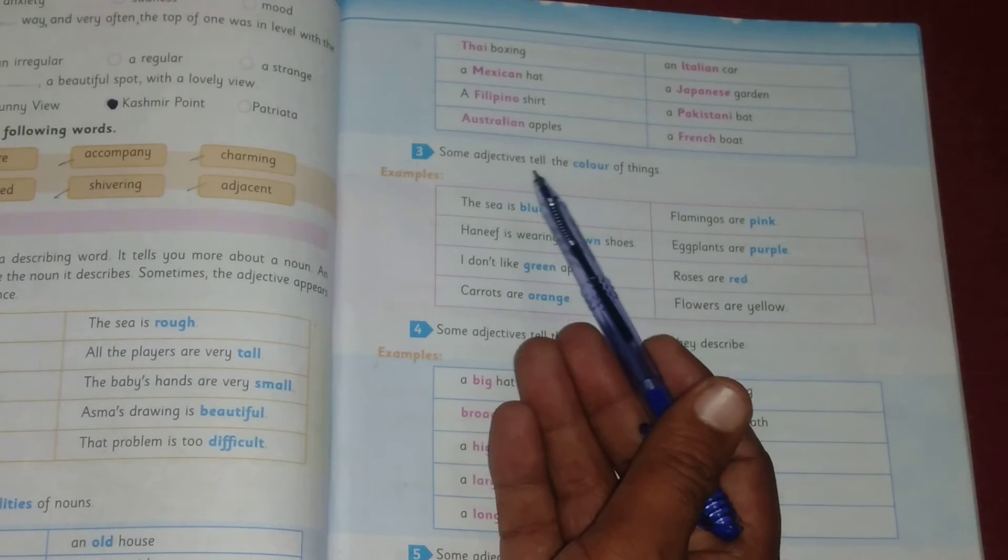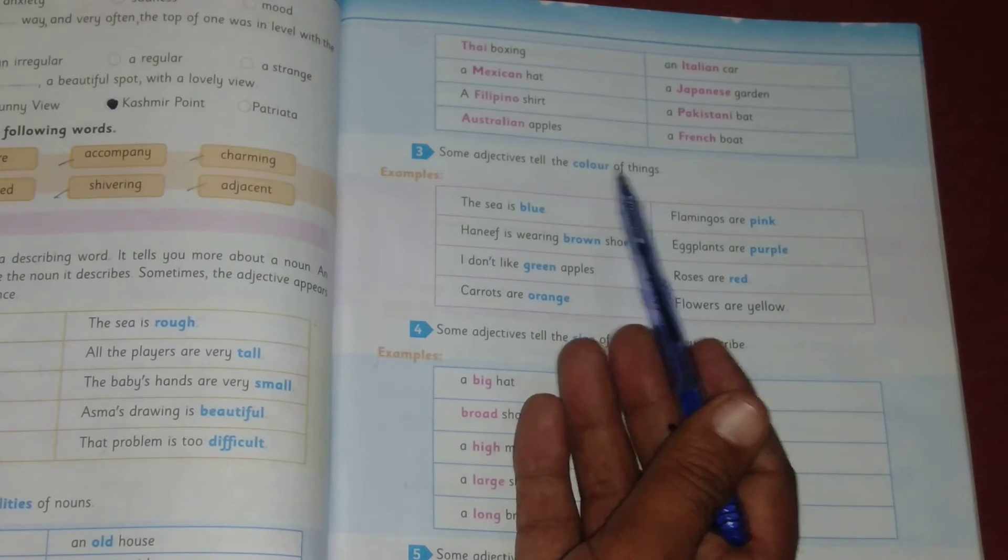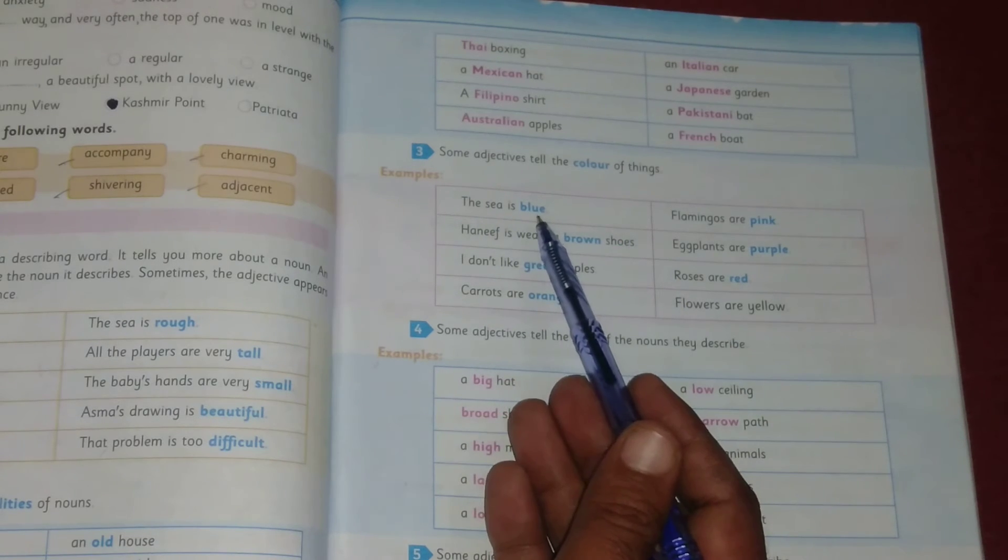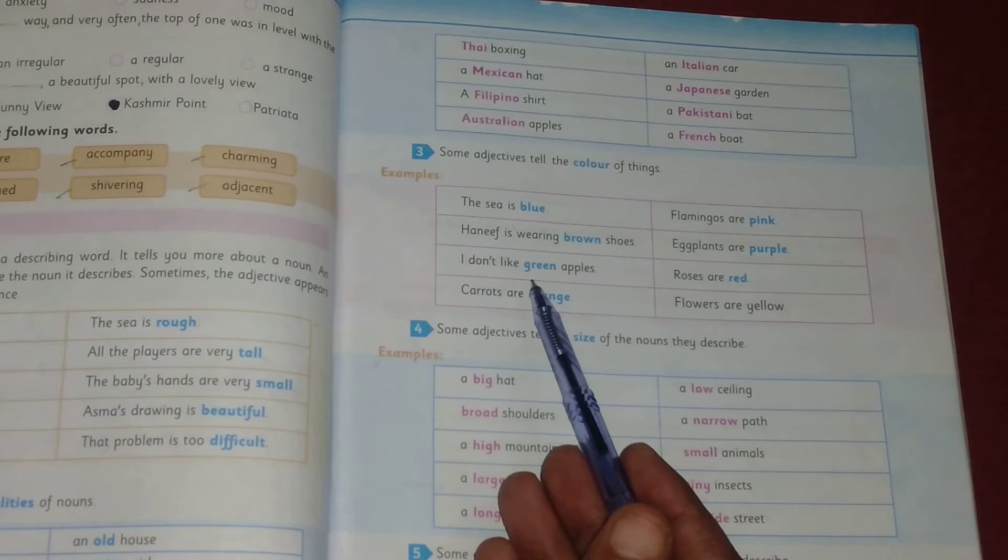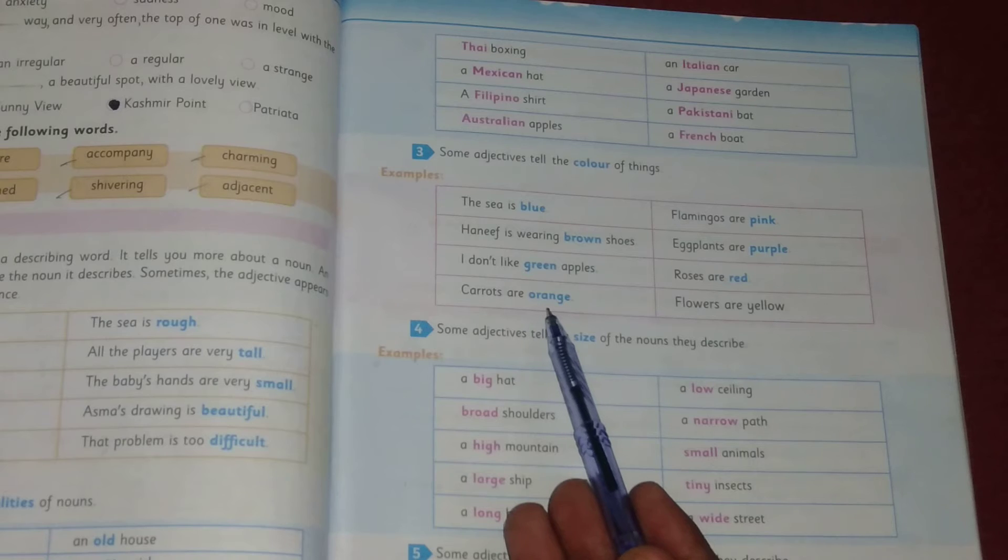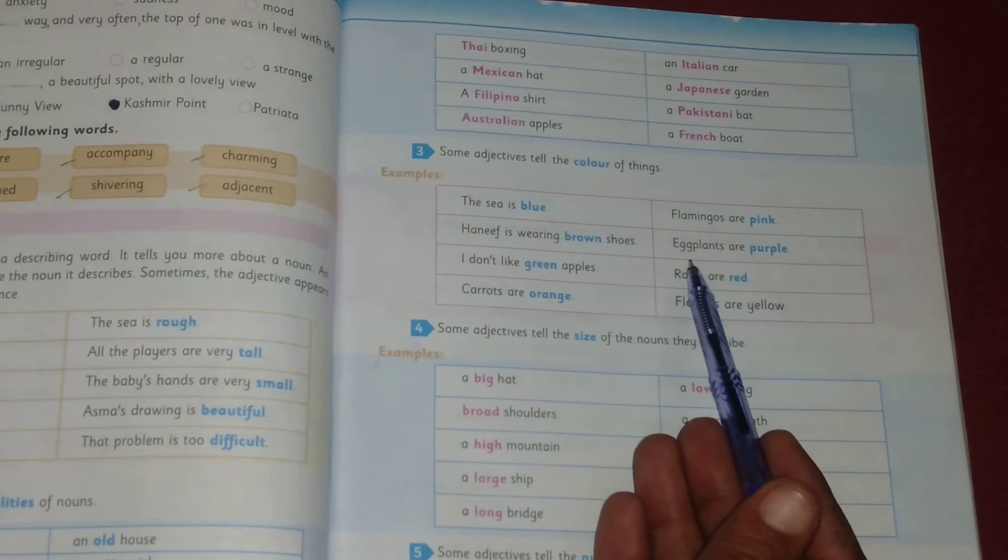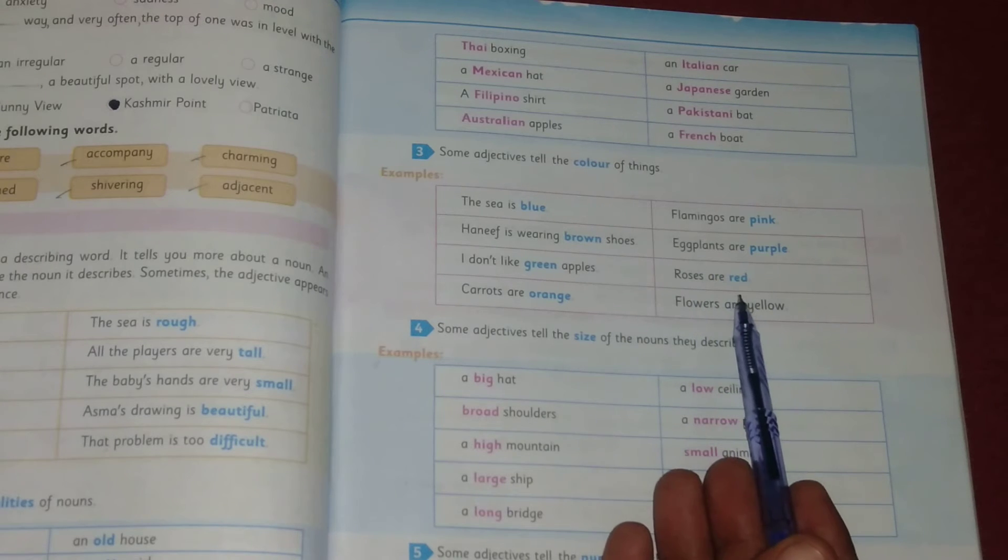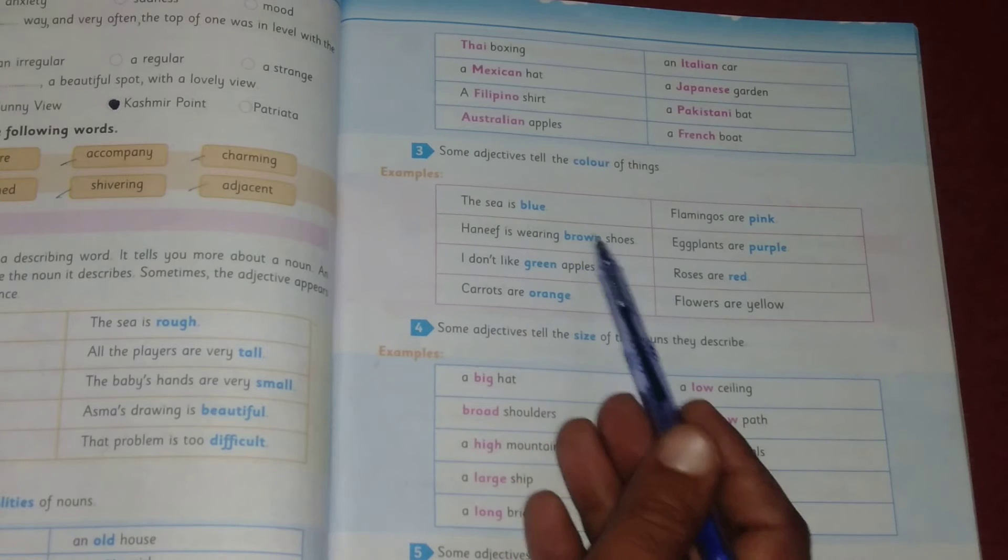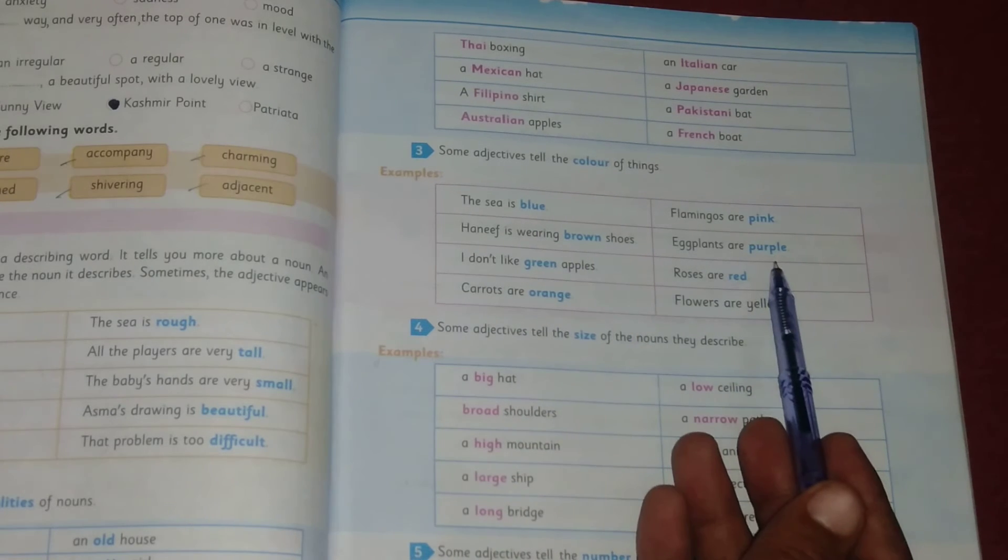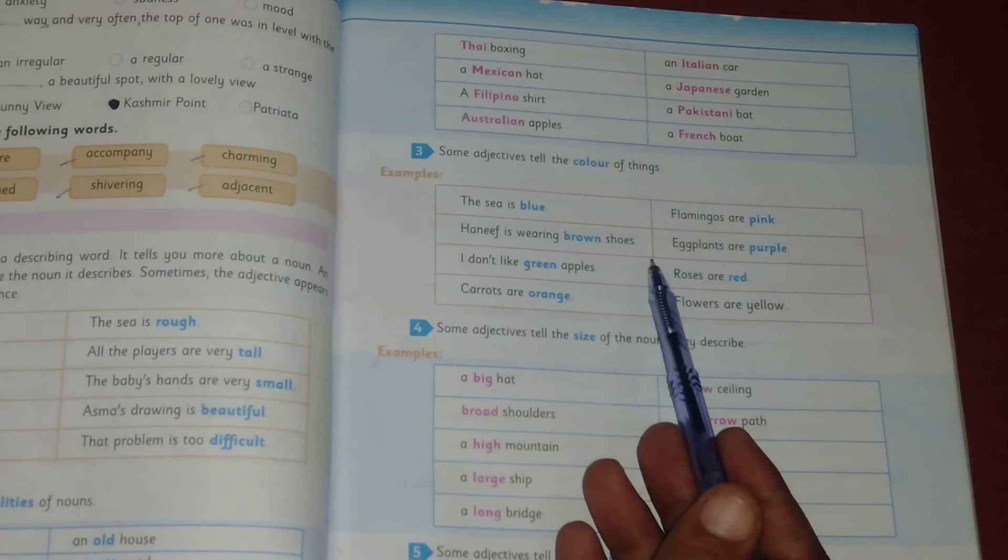Next is adjective of color. Some adjectives tell the color of things. Examples: the sea is blue. Hanif is wearing brown shoes. I don't like green apples. Carrots are orange. Flamingos are pink. Eggplants are purple. Roses are red. Flowers are yellow. All these are adjectives of color: blue, brown, green, orange, pink, purple, red, yellow.